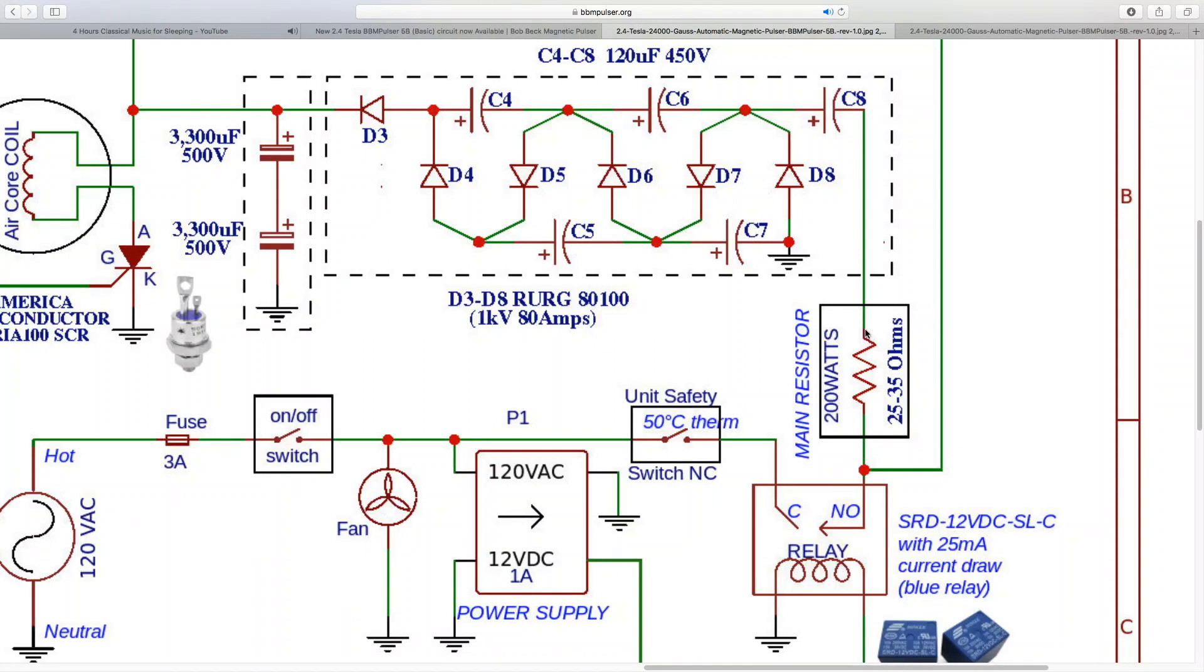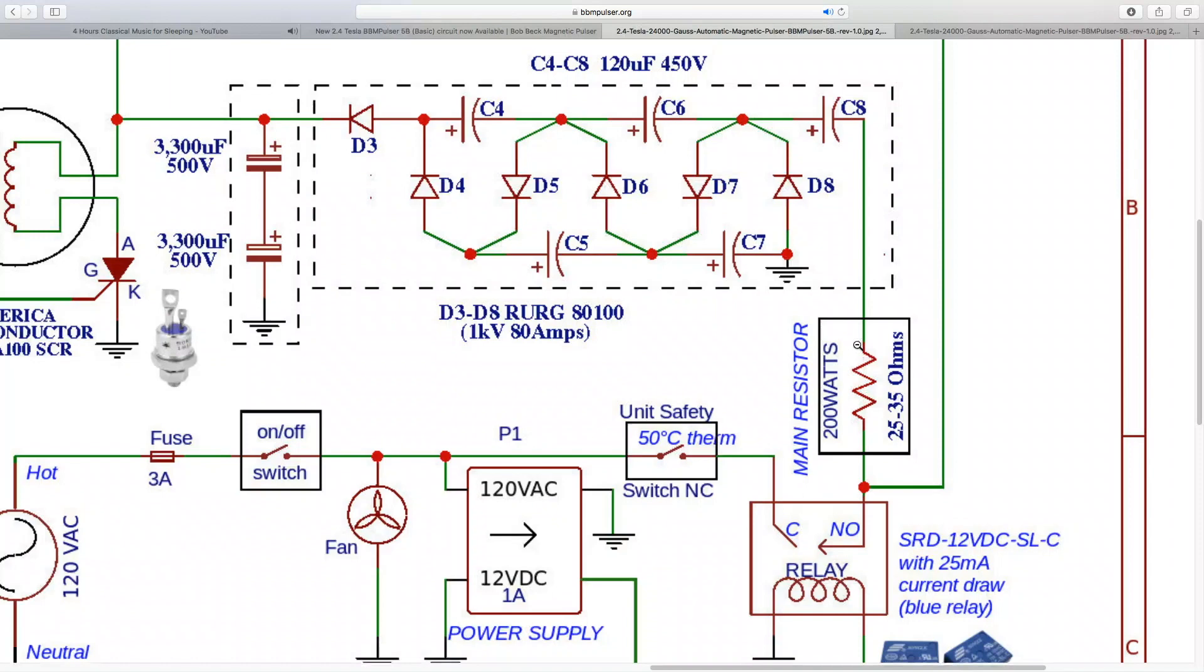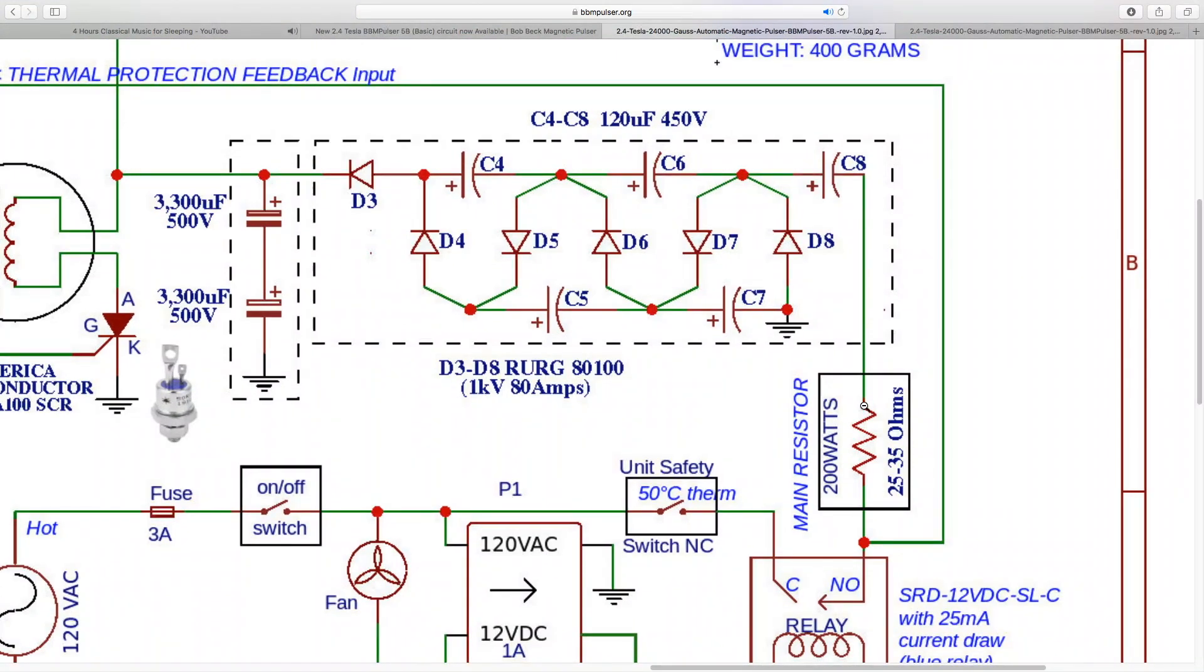In this circuit I'm using 25 to 35 ohm resistor. This is a 200 watt resistor. This is the resistor that air from the fan - this fan will be cooling it off - is the only component that gets hot in this circuit.